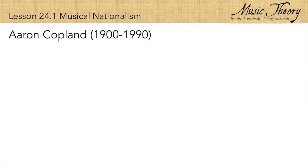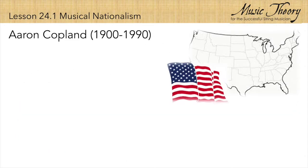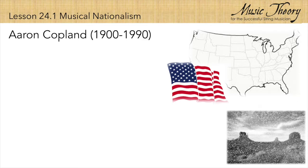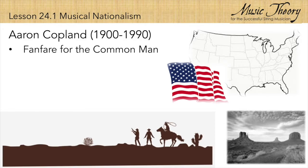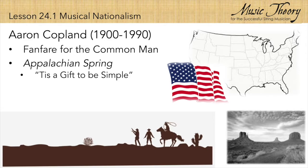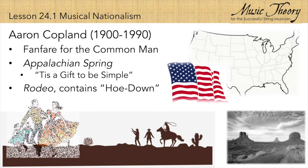Aaron Copland was one of America's greatest classical composers. He used slow-moving harmonies and open textures to create images of the vast American landscape. He is best known for his works including Fanfare for the Common Man and the music from two ballets: Appalachian Spring, which includes the Shaker tune 'Tis a Gift to Be Simple, and Rodeo, which includes his famous Hoedown.